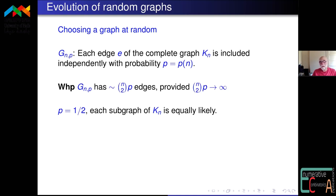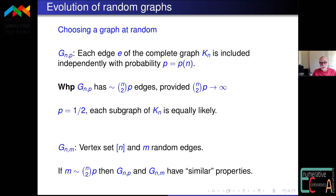With high probability G(n,p) has about n-choose-2 times p edges, under the assumption that n-choose-2 times p tends to infinity. If p is exactly a half, you're taking each subgraph of K_n equally likely. Another similar model is G(n,m), where you have the same vertex set but fix the number of edges. If m is roughly n-choose-2 times p, then G(n,p) and G(n,m) have similar properties, and there are lemmas to go from one to the other.